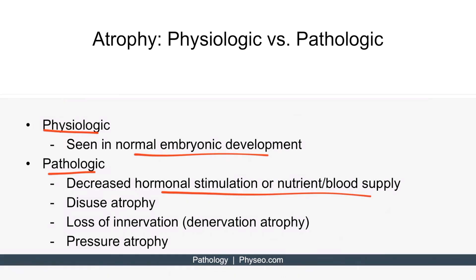Another pathologic cause of atrophy is disuse atrophy. An example is skeletal muscle atrophy when a fractured bone is immobilized in a plaster cast for a long time. Loss of innervation, or denervation atrophy, is another cause — for example, atrophy of skeletal muscle tissue following loss of lower motor neurons in amyotrophic lateral sclerosis, or ALS. Finally, pressure atrophy can also cause it, such as atrophy of surrounding tissues due to an enlarging benign tumor.